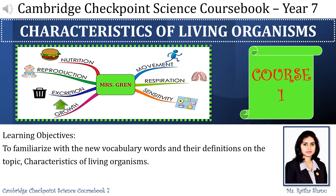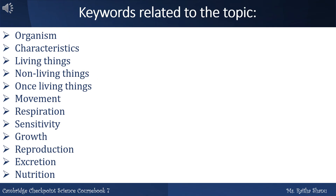Topic 2.1: Characteristics of Living Organisms, Course 1. Learning Objectives. Keywords related to the topic: Organism, Characteristics, Living Things, Non-living Things, Once-living Things, Movement, Respiration, Sensitivity, Growth, Reproduction, Excretion, Nutrition.